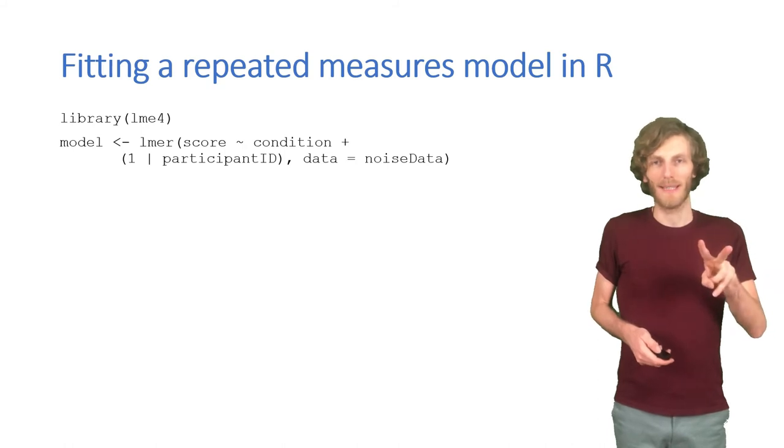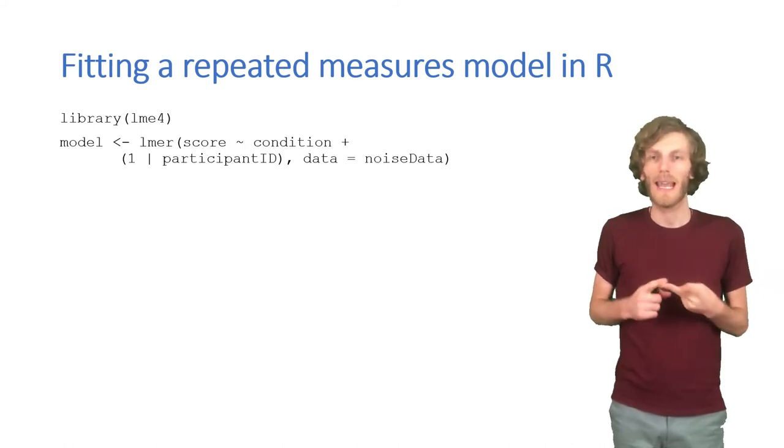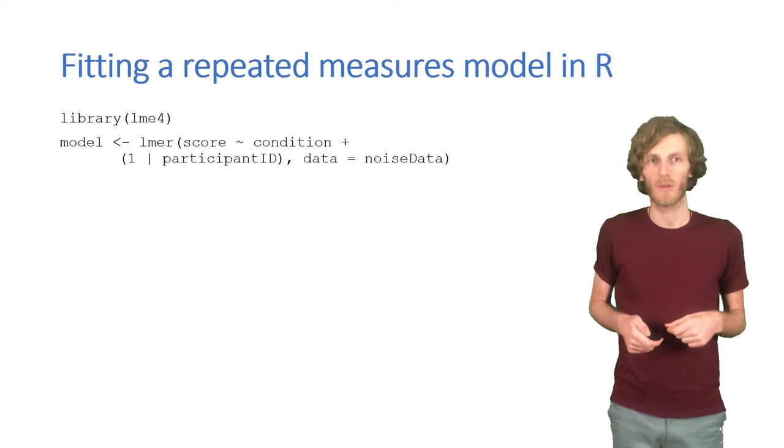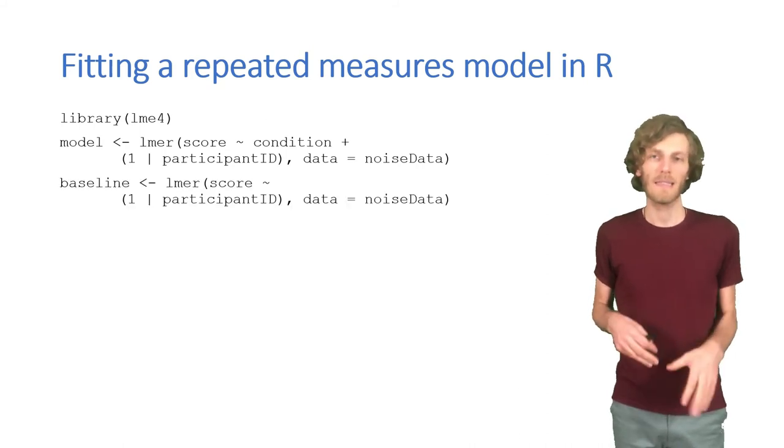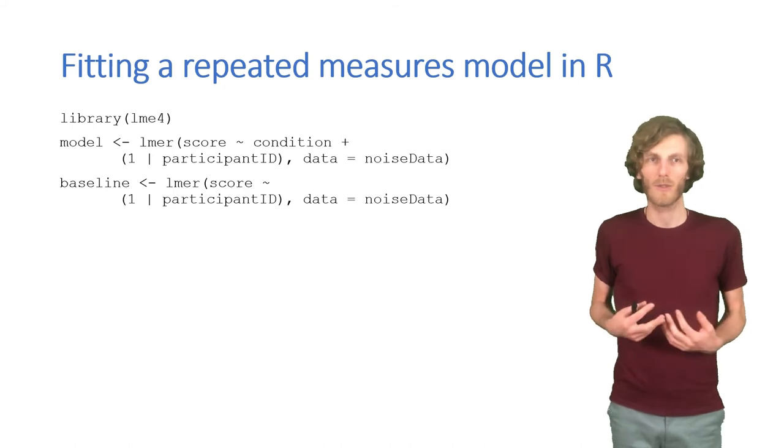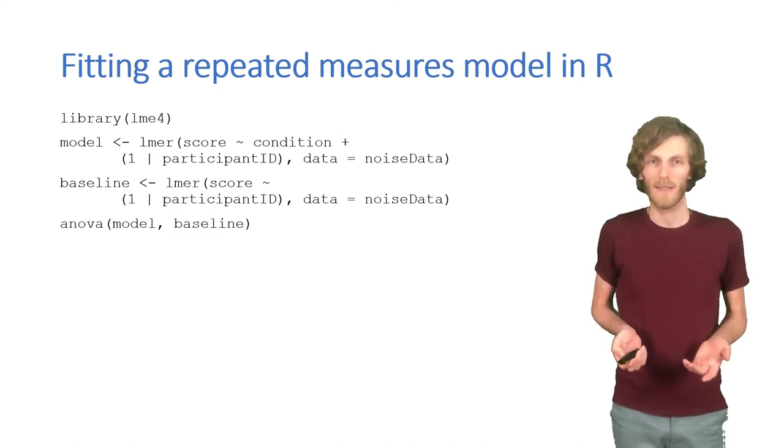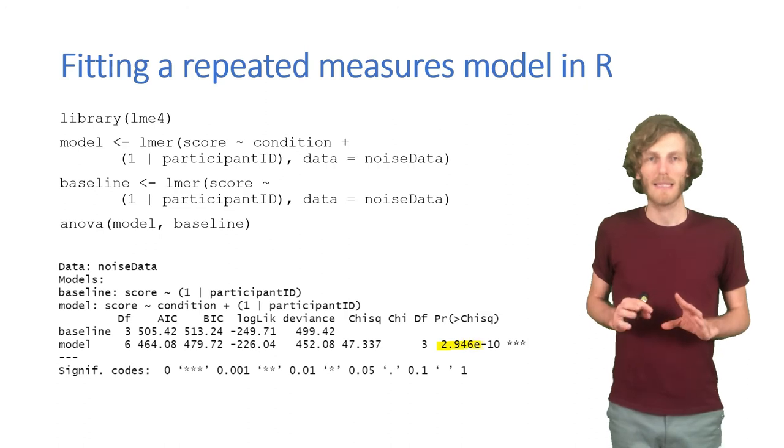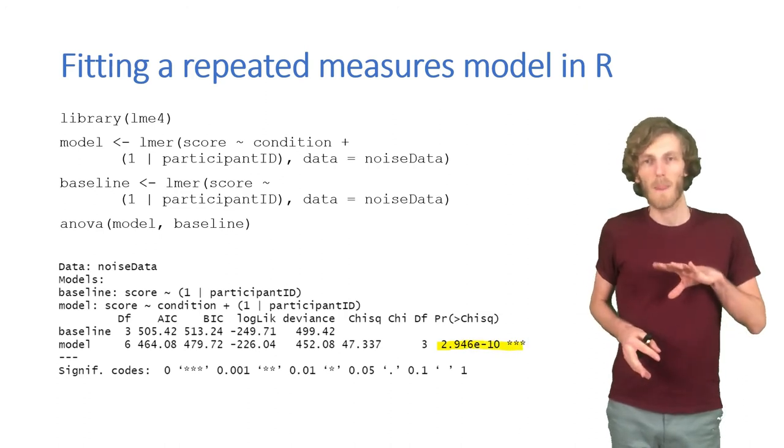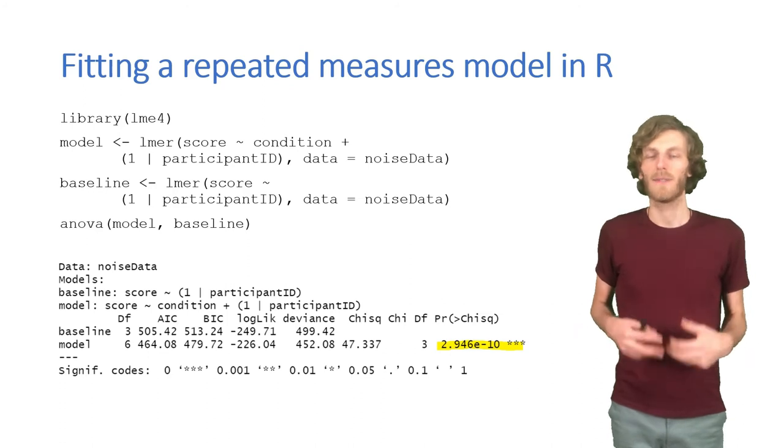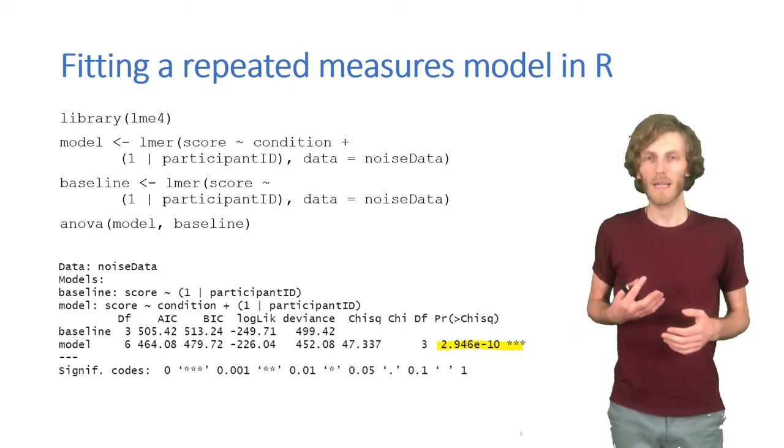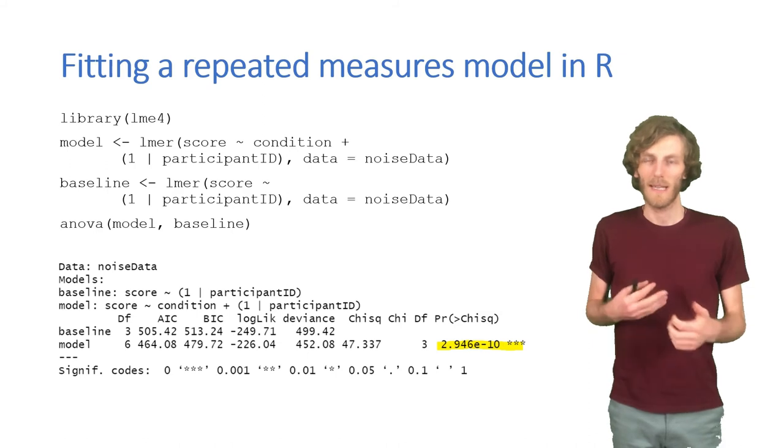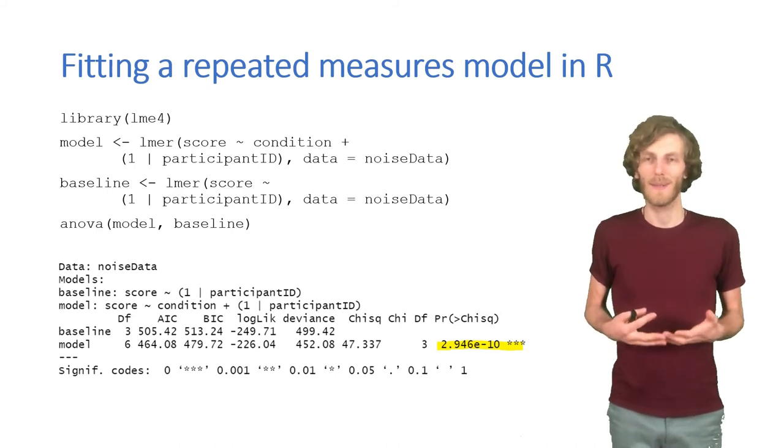But now this model has two predictors in it, it has the participants in it, and it has the groups in it. So we cannot just compare it to a null model, we need to compare it to a model that is the same apart from the groups. Our baseline model here has the participant factor in it, and we need to compare those two models. To compare two models, we can use the ANOVA function. The output is actually quite complicated, because there are lots of different indices for comparison. But the only thing we really need to look for is whether the model that contains the groups is significantly better. And that's indicated by the p-value here at the end, so we can conclude that which situation the participants were in made a difference with regard to their score.